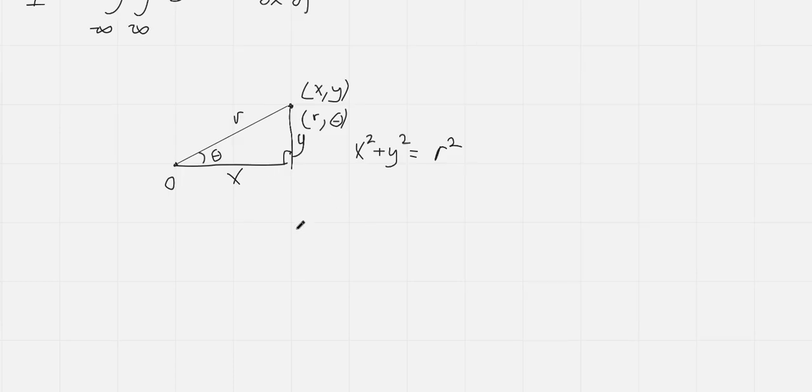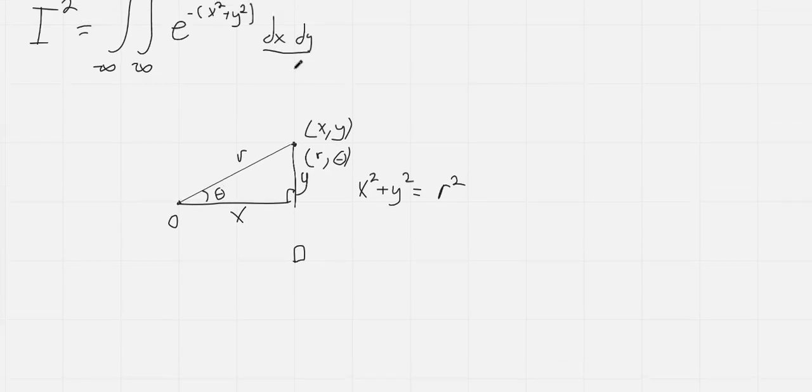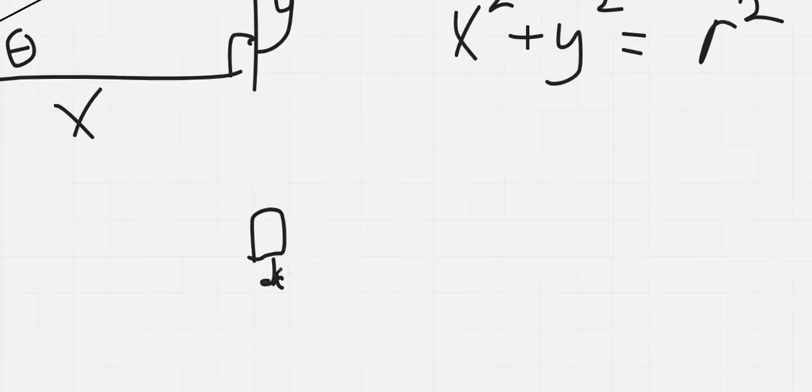And now we see that dx dy refers to some small area. It's basically a rectangle corresponding to a tiny dx and a tiny dy. And so dx dy is just this area. And instead we want to write this in terms of r, dr, and d theta.